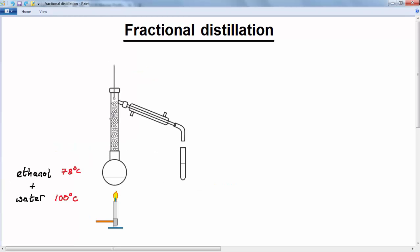So what we've done is we've replaced our ordinary round-bottom flask with a new type of flask, which has got a long neck, and that neck is filled with either small glass rods or small glass beads. This is called a fractionating column, and it's filled with these glass beads.